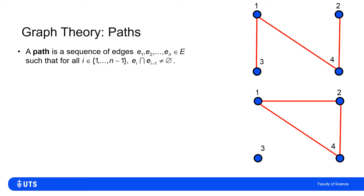We can extend this definition to the idea of a path. A path is just a sequence of edges, and the definition where for i going from one to n minus one, e_i intersection e_{i+1} is not the empty set, is basically saying that consecutive edges share a node in common.